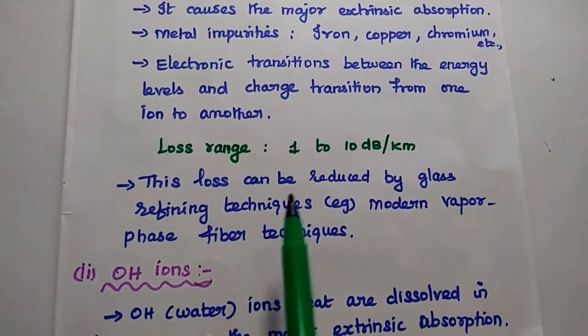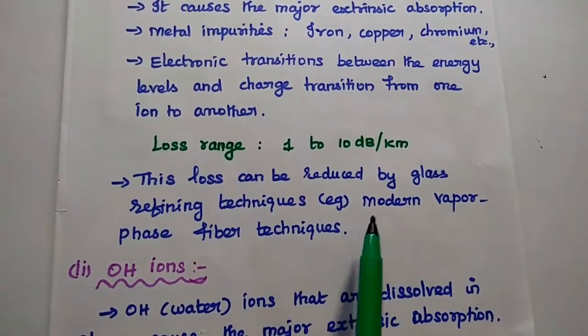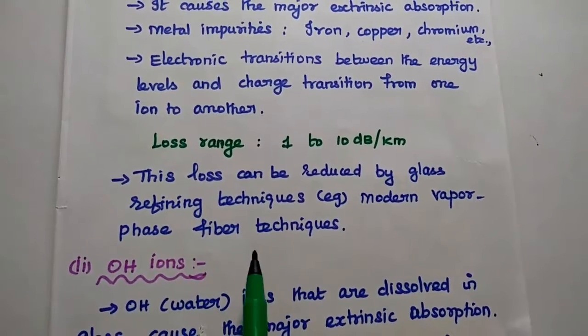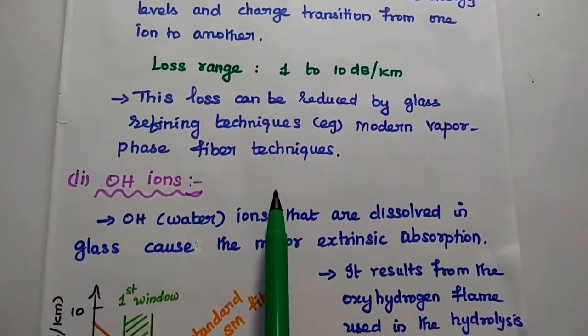This type of loss can be reduced by using glass refining techniques, that is modern vapor phase fiber techniques. This technique is used to reduce metal transition.